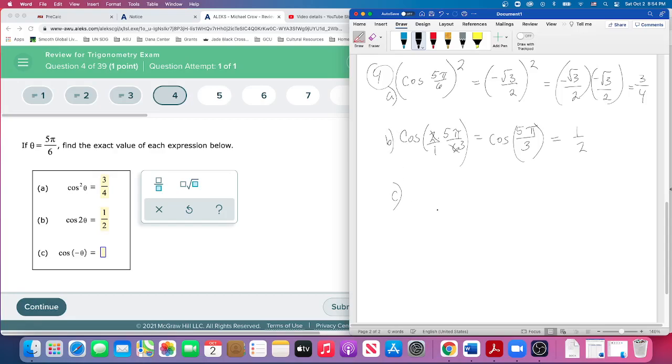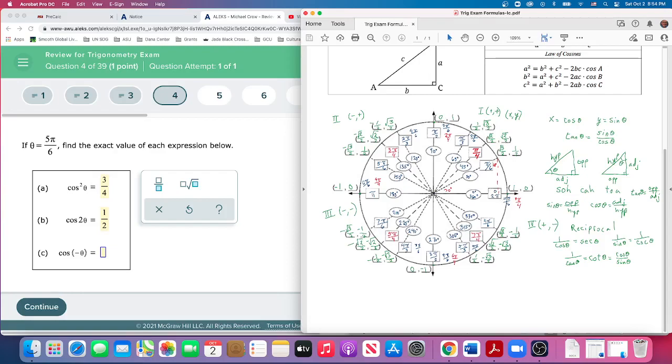The last one is going to be cosine of negative 5π/6. So what is that? That's going on the unit circle, but that's going to go backwards now. So it's kind of good that we did count - we're starting at 0 and going back 5π/6.